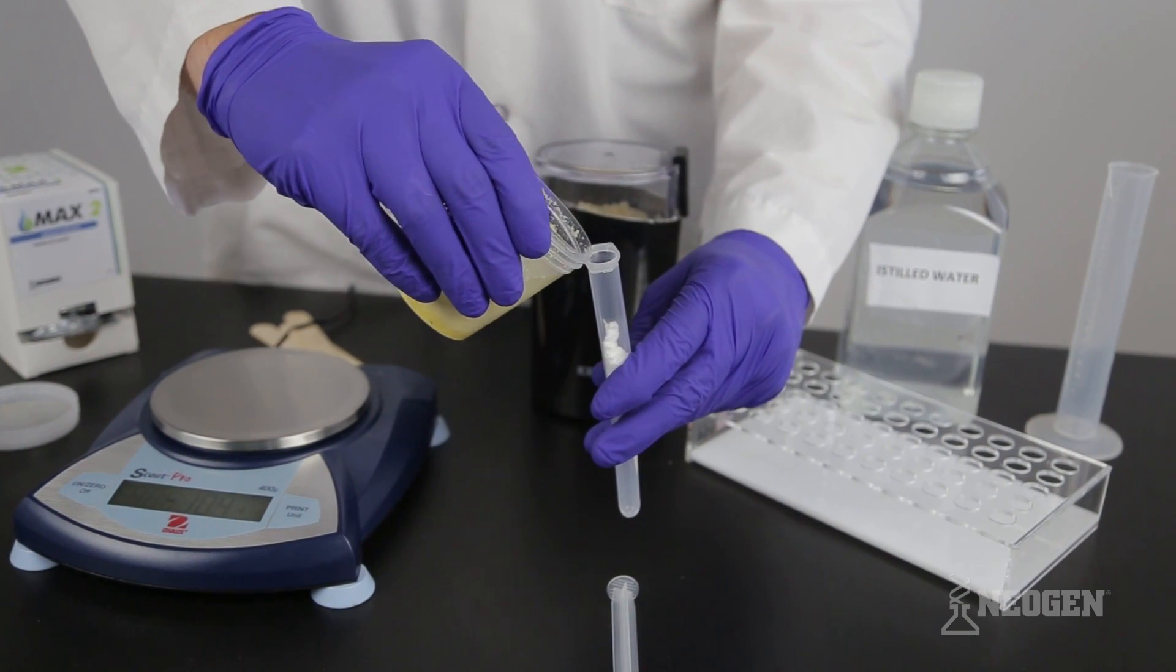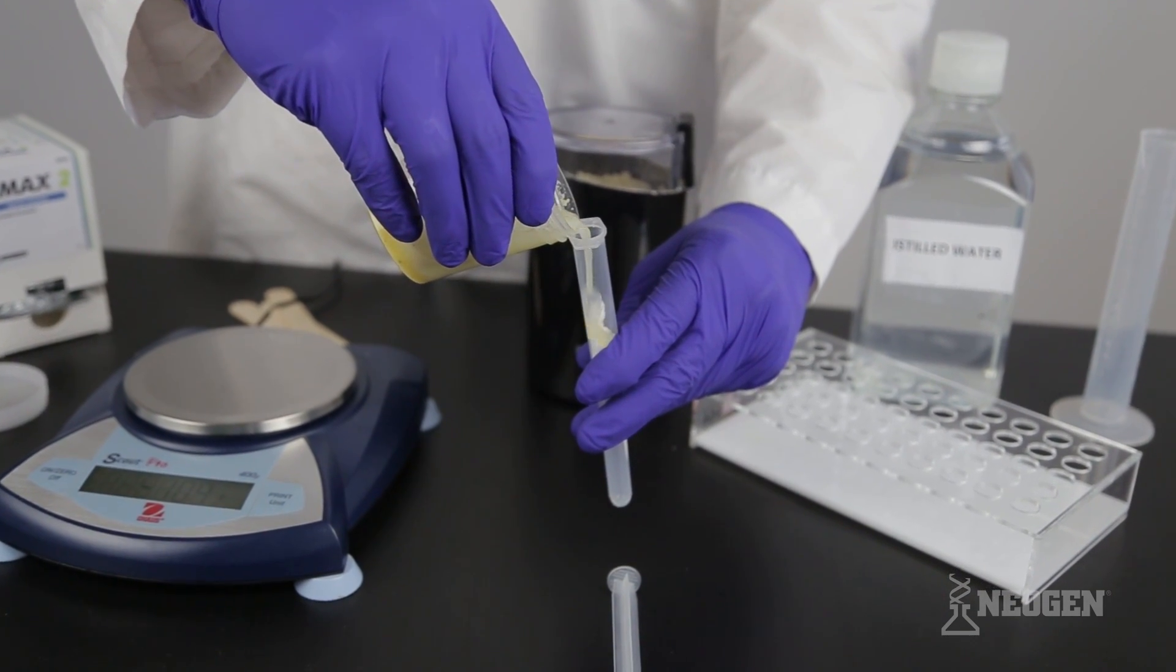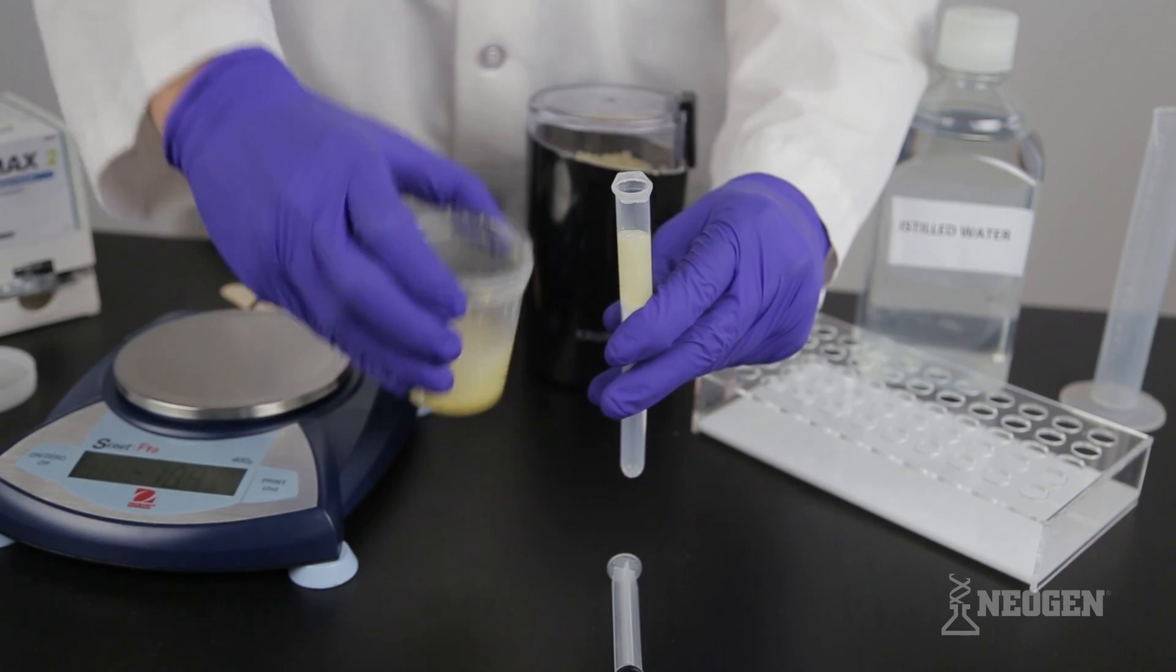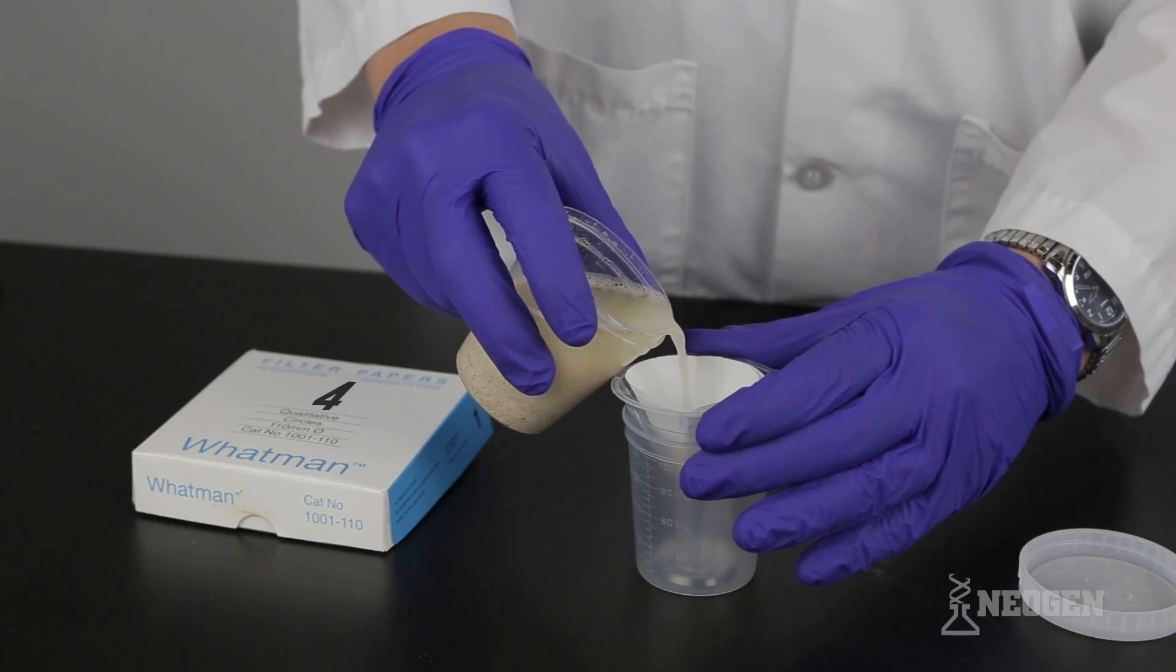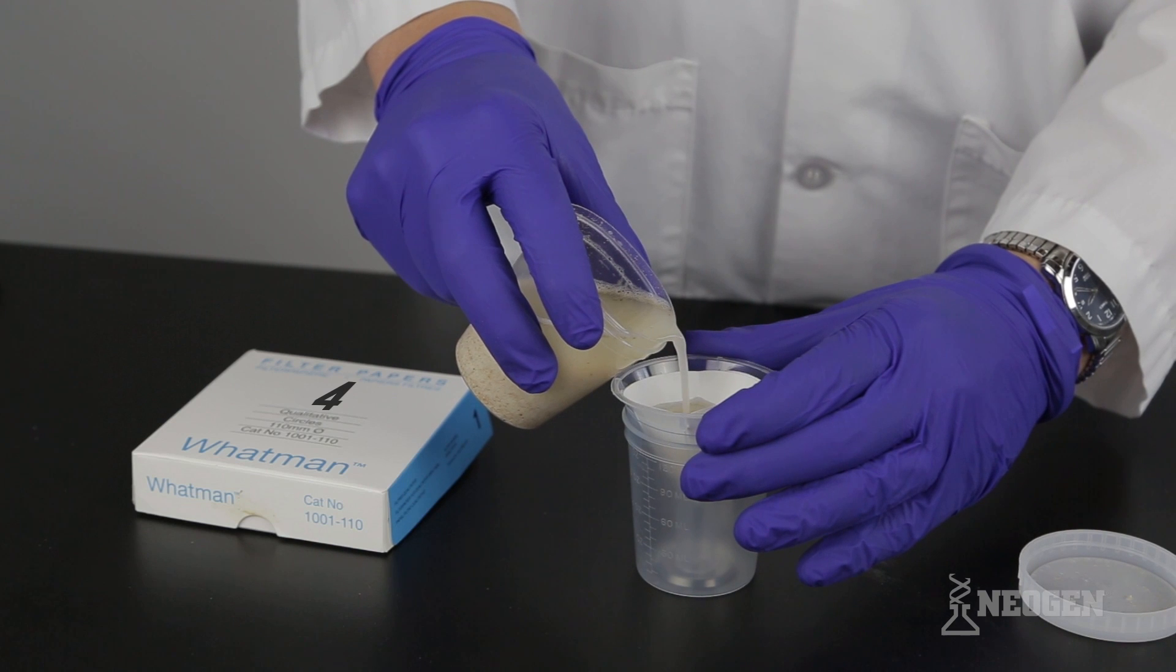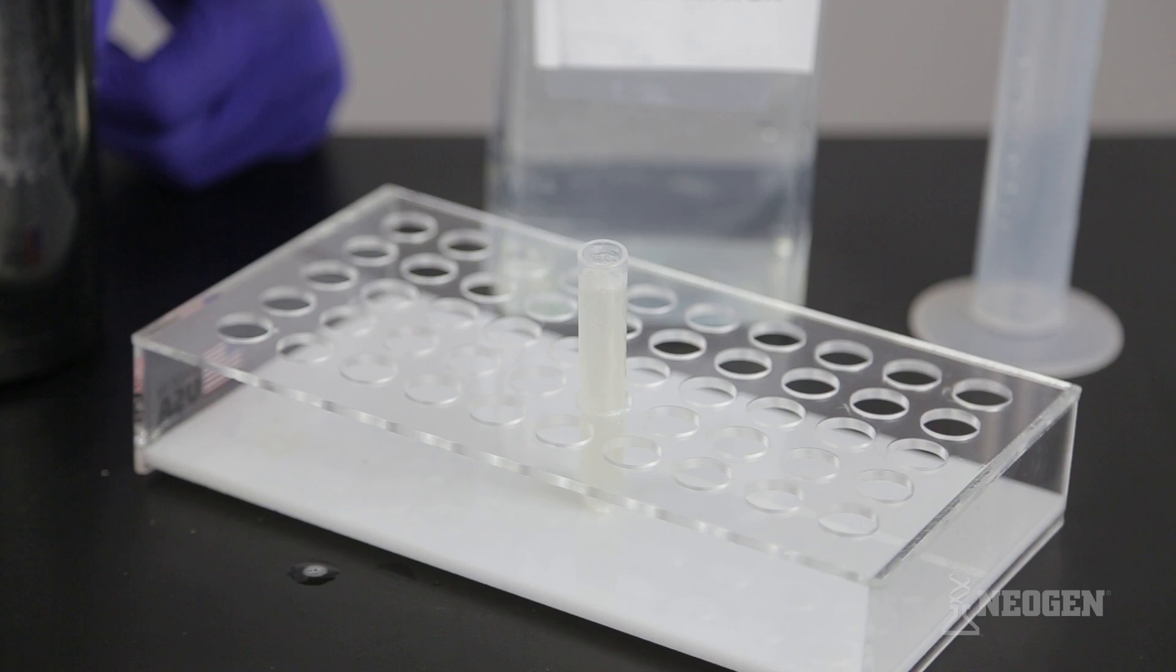Filter the extract by pouring at least 4 milliliters through a filter syringe, collecting the filtrate in a sample collection tube. You can also filter using Whatman number 4 filter paper. Your sample is now ready for testing.